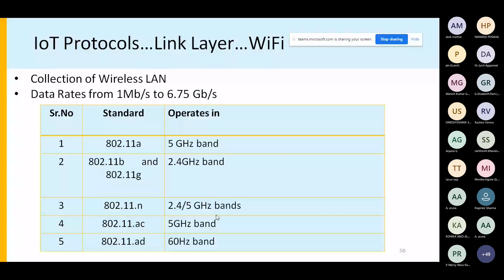The three higher standards — 802.11n, ac, and ad — are based on MIMO (Multiple Input Multiple Output) technology, meaning they use multiple antennas. In 802.11a, b, and g there is a single antenna, whereas in n, ac, and ad there is an array of antennas. For small IoT devices, significant miniaturization is required to place multiple antennas on such tiny devices.